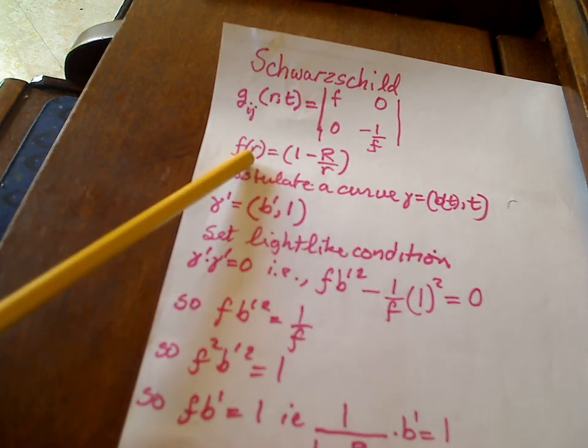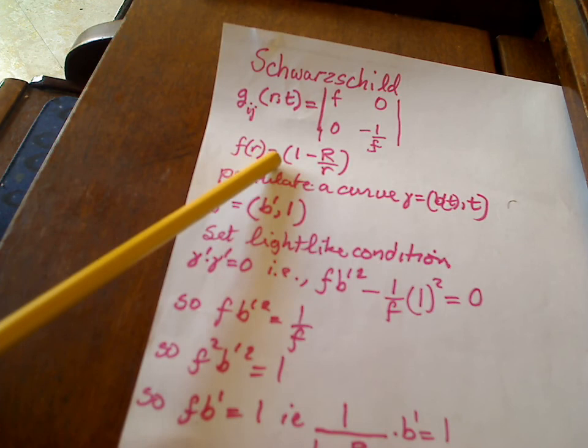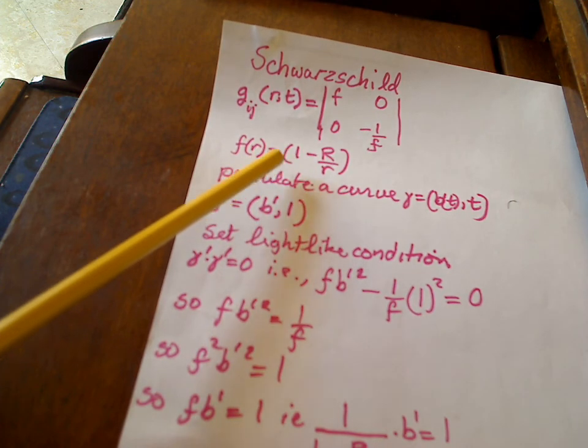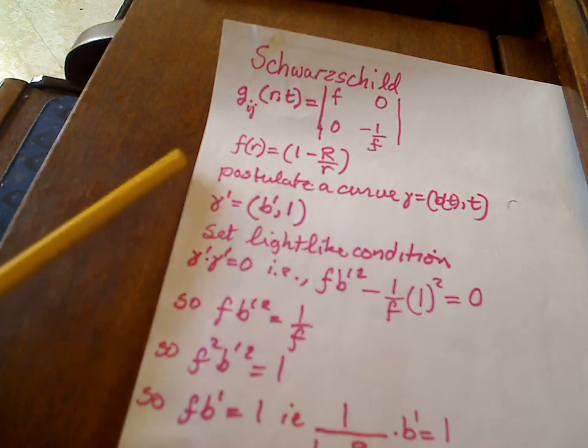And here's actually what the function is: f(r) is this one minus capital R over little r, and capital R is just the Schwarzschild radius.